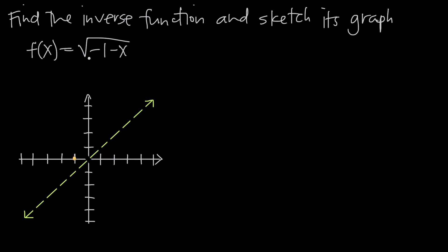Since we want values whose square root we can easily find, let's try x equals negative 5. We'd have negative 1 minus negative 5, or negative 1 plus 5, which is positive 4. The square root of positive 4 is 2, so the point negative 5, positive 2 exists on our function f of x.